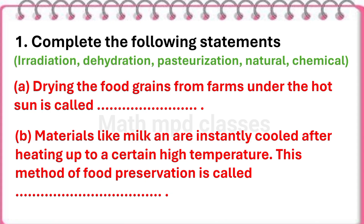First, drying the food grains from farms under the hot sun is called blank. Answer is dehydration.